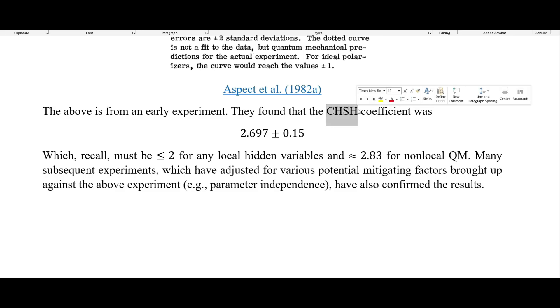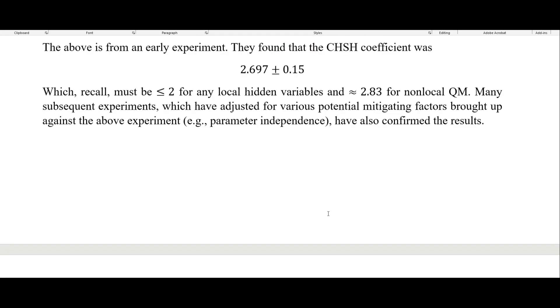So the above is an early experiment, as I said, by Aspect et al. They found that the CHSH coefficient was this. So 2.697 plus or minus 0.15, which recall we have to have the correlation coefficient be less than or equal to two for any local hidden variables and about 2.83 for non-local quantum mechanics. So this is a lot closer to what we would expect for non-local quantum mechanics. There have been many subsequent experiments which have adjusted for various potential mitigating factors brought up against the above experiment, such as parameter independence, which I'm going to talk about in detail in the next video. And all of those subsequent experiments have also confirmed these results. So they have also confirmed that the non-local quantum mechanics is the right version of quantum mechanics, that we do not have any local hidden variables.